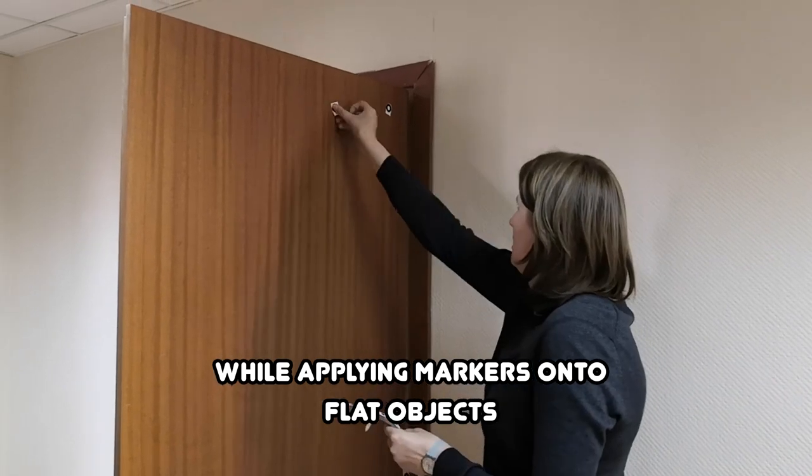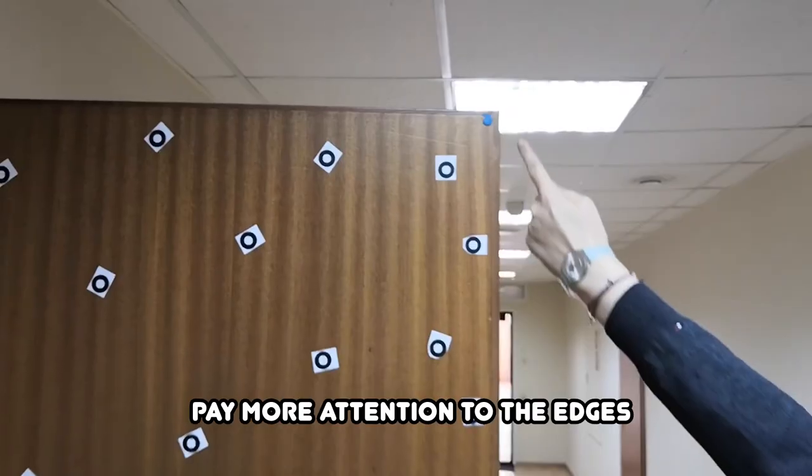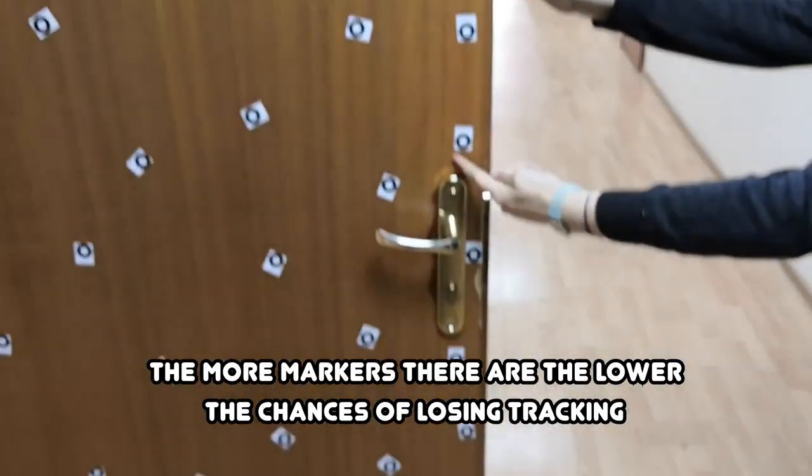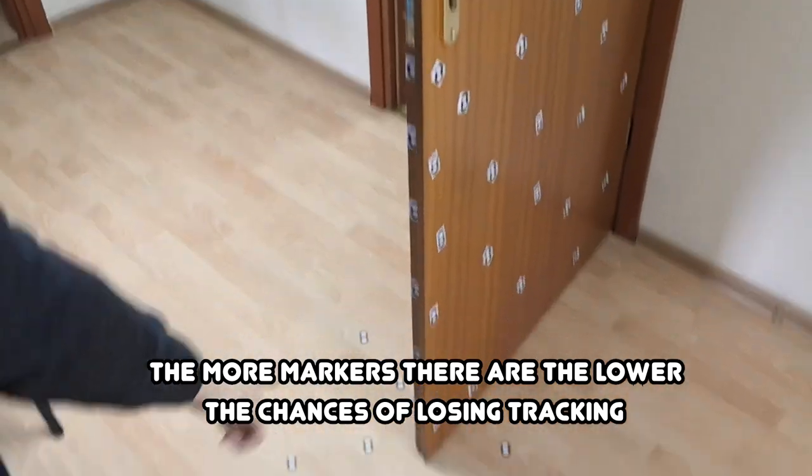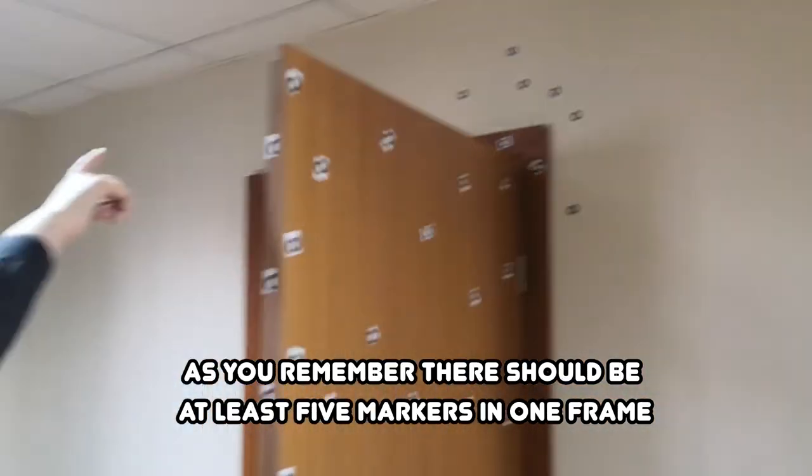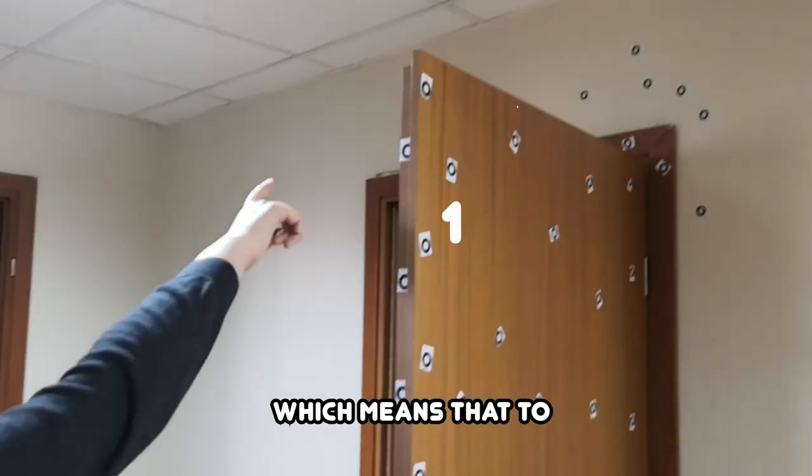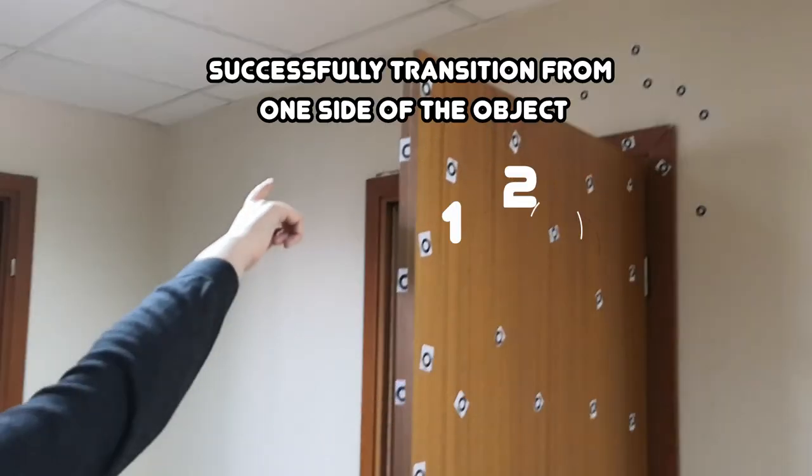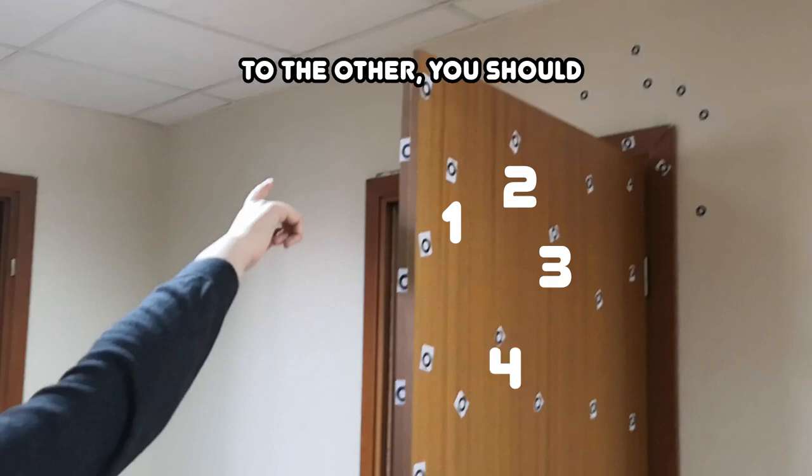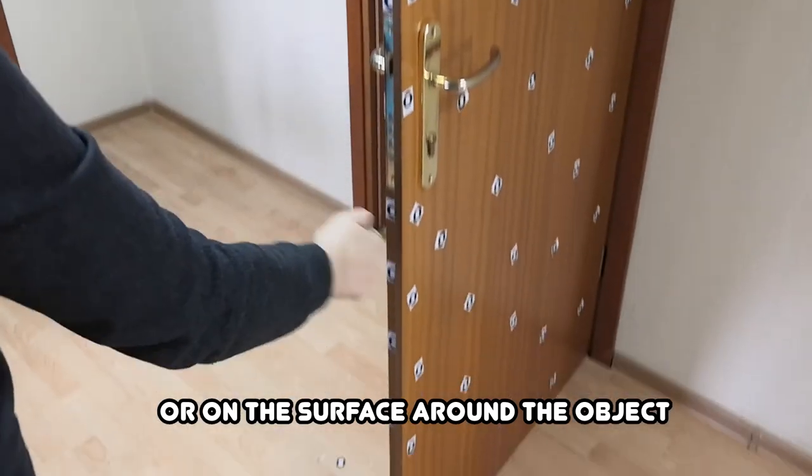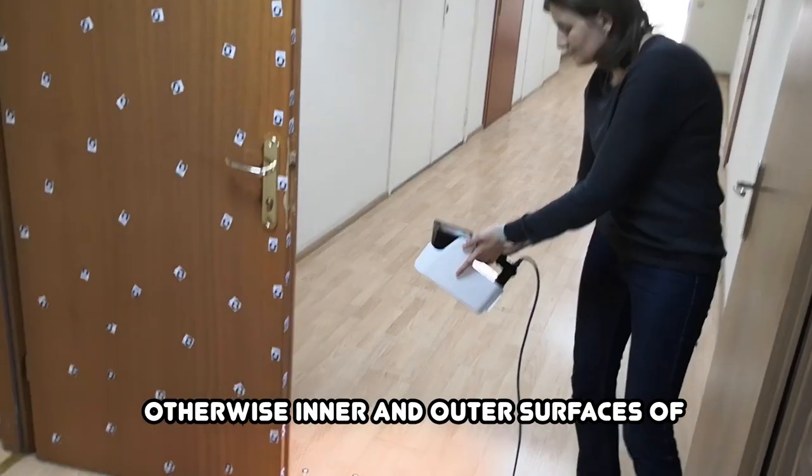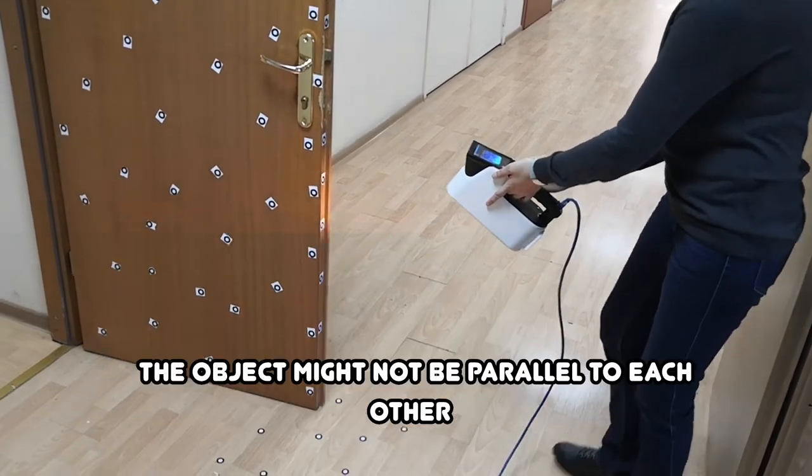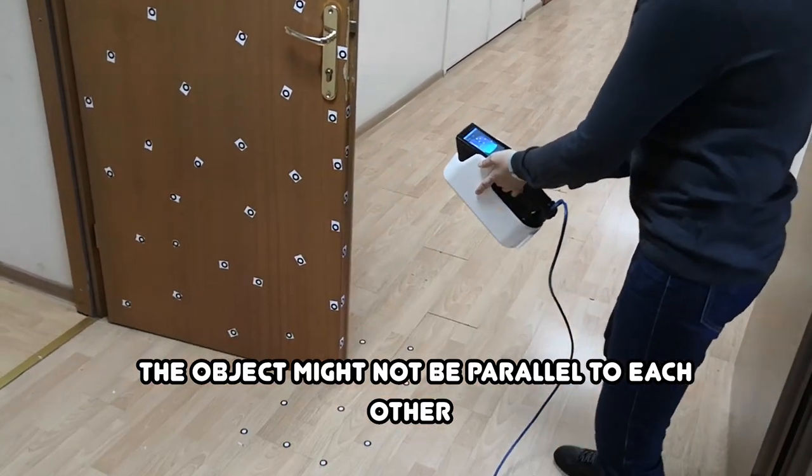While applying markers onto flat objects, pay more attention to the edges. The more markers there are, the lower the chances of losing tracking. As you remember, there should be at least five markers in one frame, which means that to successfully transition from one side of the object to the other, you should either put enough markers on the edge or on the surface around the object. Otherwise, inner and outer surfaces of the object might not be parallel to each other.